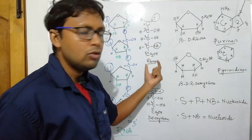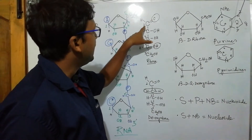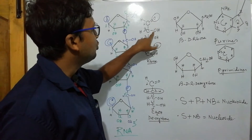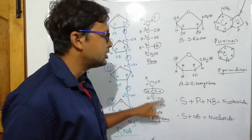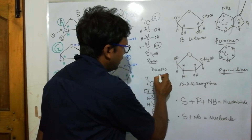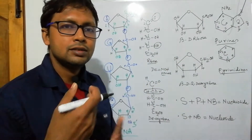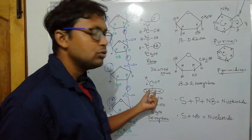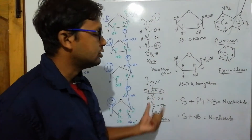Now for deoxyribose — the difference from ribose is only at the second carbon position. In ribose, the second carbon has an OH group, but in deoxyribose the second carbon has only hydrogen. 'Deoxy' in Latin means not present or absent, so deoxyribose means no oxygen is present at the second carbon position.